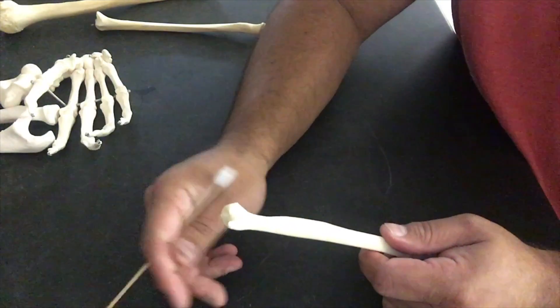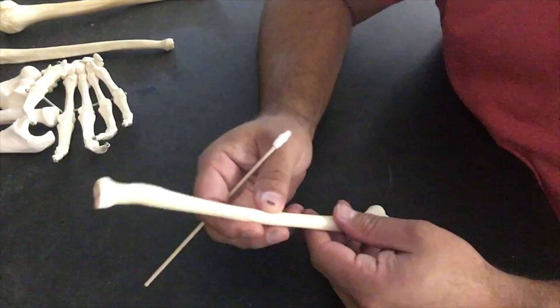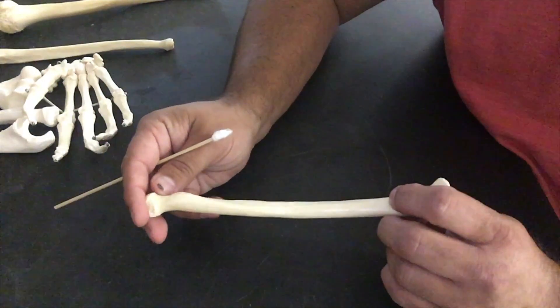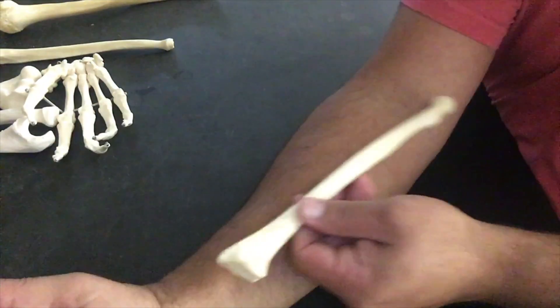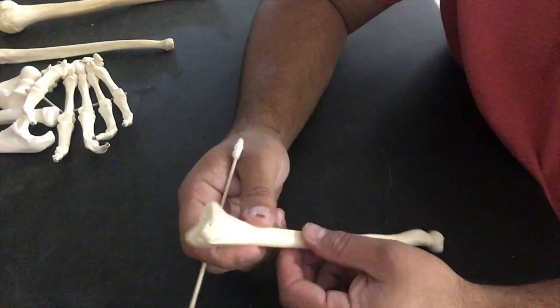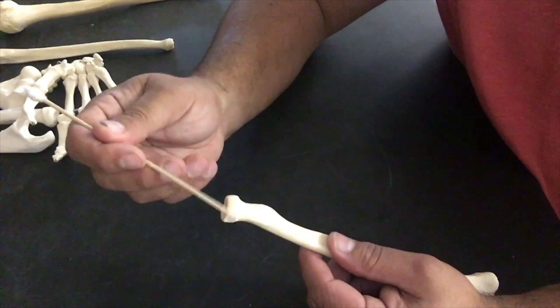The next bone we're going to look at is the radius, and we're going to keep these together and then identify it left or right. Again, the radius is a lateral most bone. We're going to look at some of the landmarks, so we have the head—rounded portion.